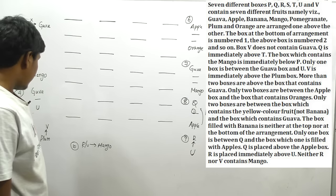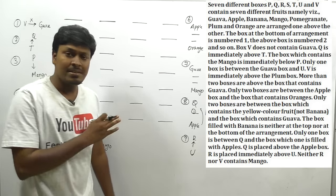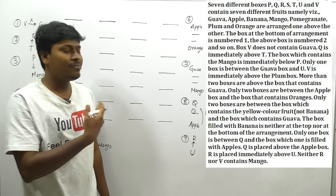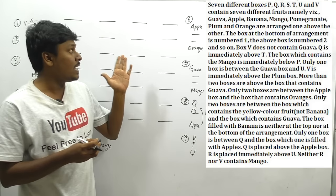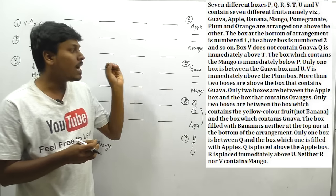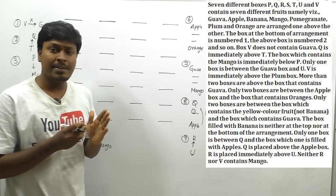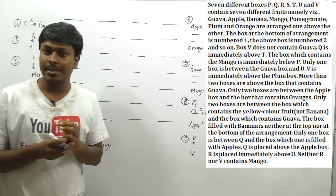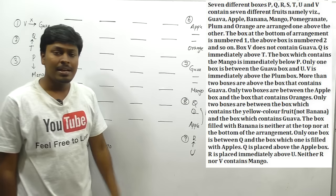Friends, we have completed reading every clue without being able to substitute any data directly. This is what makes this question so superb — in most arrangement questions we can substitute at least one data point, but not here. If you are a bank aspirant, practice these types of difficult arrangements. Don't just practice simple arrangements — always target the difficult ones.